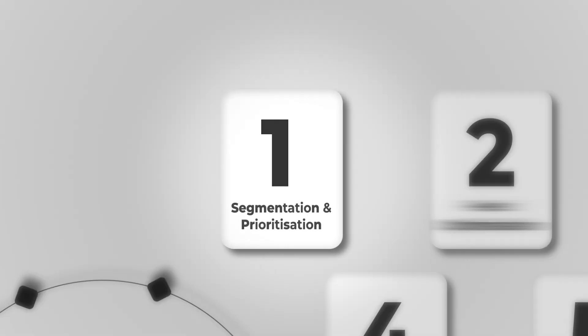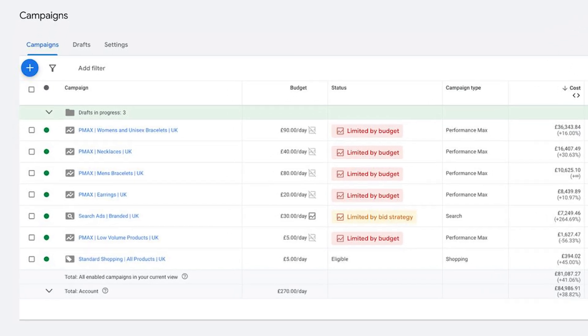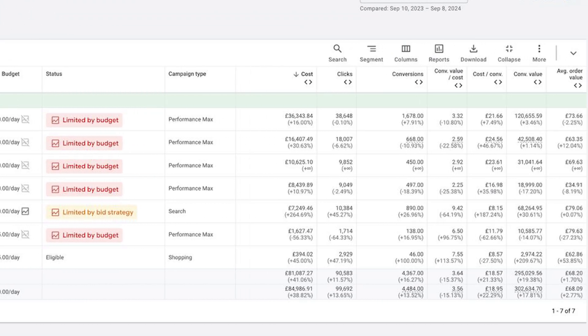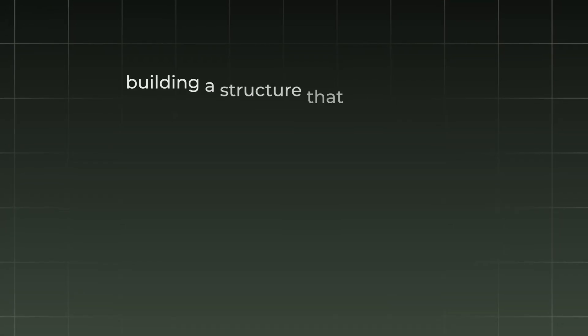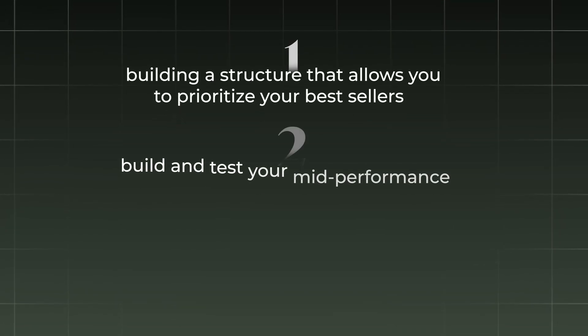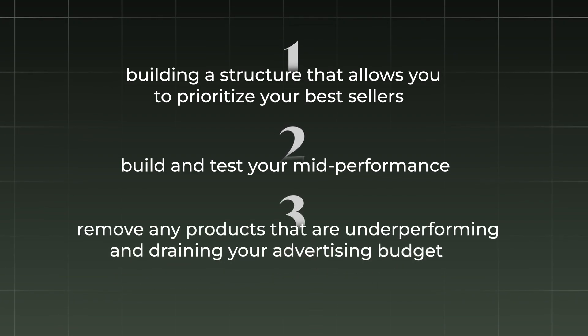Tip number 1 is segmentation and prioritisation. When you're brand new to Performance Max, it's absolutely fine to dump everything in one campaign and allow yourself to gather some purchase data and start selling your products online. However, once you have that data — once you've got hundreds of conversions inside that campaign — you can then begin to segment, building a structure that allows you to prioritise your best sellers, build and test your mid-performers.